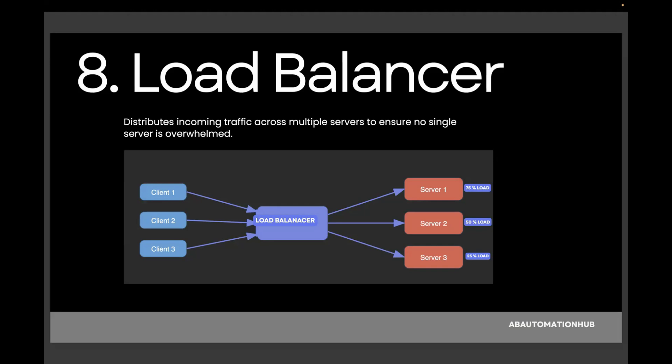This way, traffic is evenly spread, preventing any one server from being overloaded. Another algorithm example: server A handles 5 users, server B handles 3, and server C handles 2. The load balancer sends the next user to server C because it has the fewest active connections. Load balancer forwards requests to the next available server to ensure high availability and consistent performance. In this diagram, multiple clients access the application and the load balancer distributes their requests across servers.